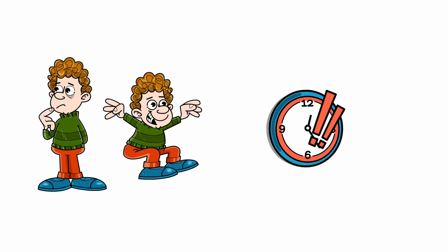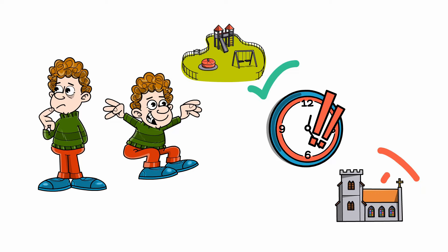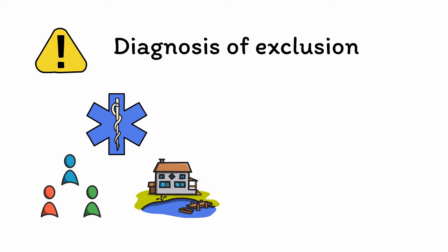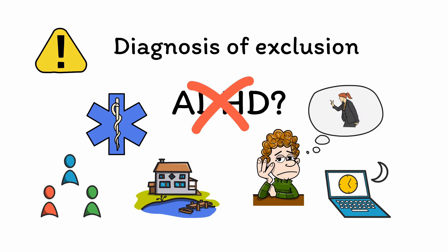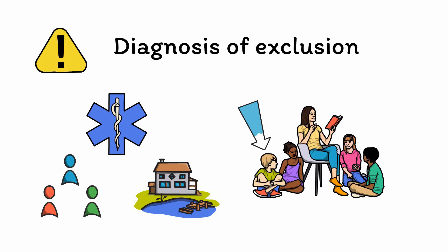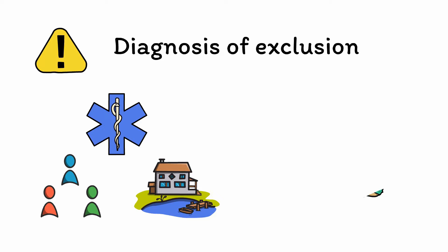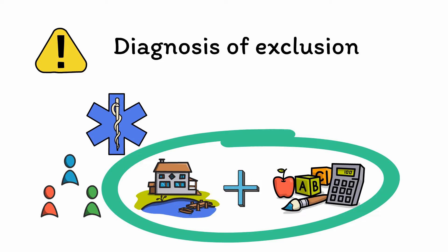Another caveat when diagnosing ADHD is that it is a diagnosis of exclusion — other medical, environmental, and social reasons for inattention and hyperactivity must be ruled out first. For example, a child stressed by watching their parents fight every evening may have trouble sleeping, leading to fatigue and inattention that should not be automatically assumed to be ADHD. ADHD is also diagnosed more frequently in the youngest children in each class due to their earlier stage of cognitive development, illustrating how unconscious expectations play a role. The DSM therefore requires that signs of ADHD be present in at least two different settings, such as at home and at school, before assigning the diagnosis.